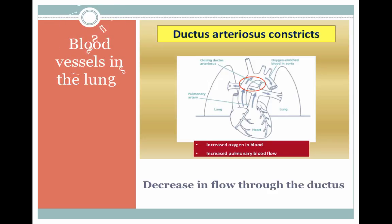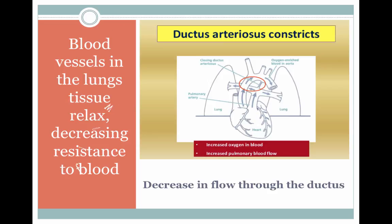As the blood vessels in the lung tissue relax, decreasing resistance to blood flow, and with increased systemic blood pressure, there is a significant increase in pulmonary blood flow and a decrease in blood flow through the ductus arteriosus. Normal cardiac circulation now occurs, with oxygen from the alveoli being absorbed by the blood in the lungs and returned to the left side of the heart, where it is pumped out to the newborn's body.